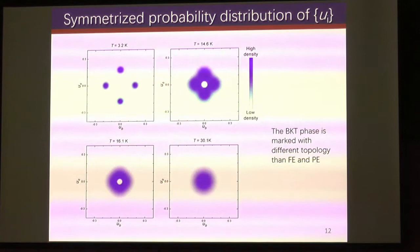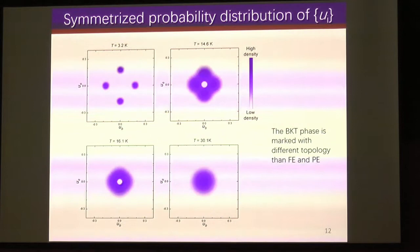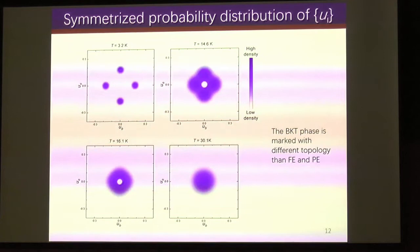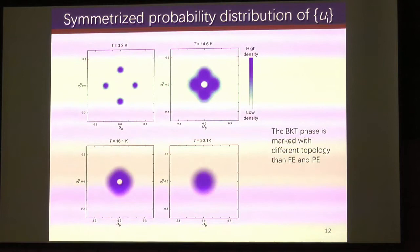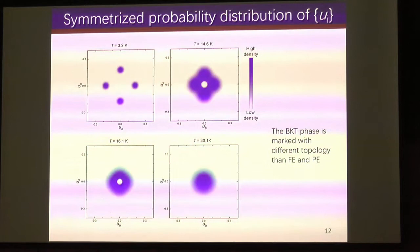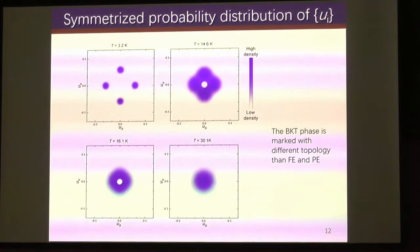One last piece of evidence for the BKT phase is the symmetrized probability distribution of the local mode. At the paraelectric phase it is continuous, with four-fold symmetry breaking at the ferroelectric phase. Between those two phases — the BKT phase — the distribution shows a different topological distribution.